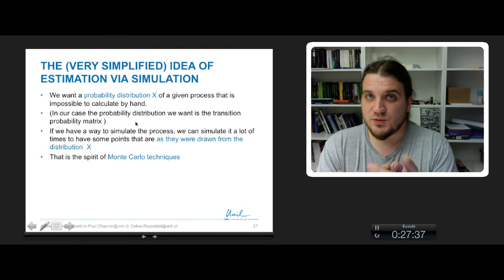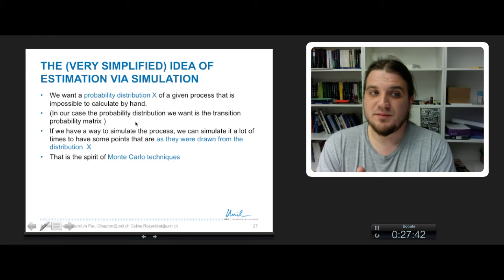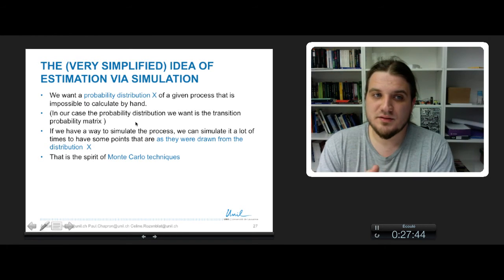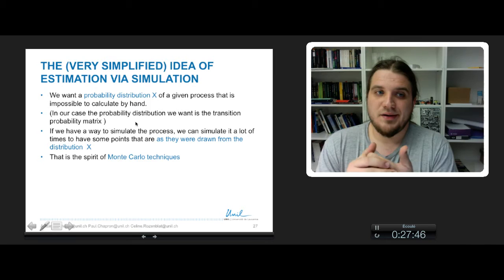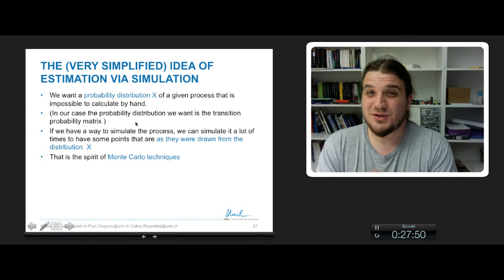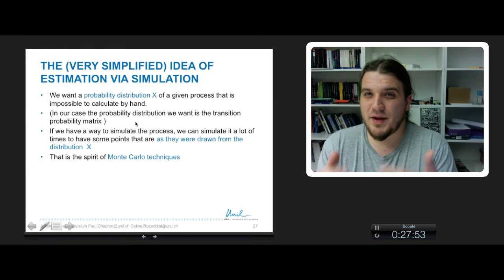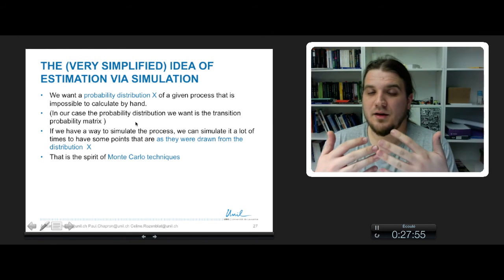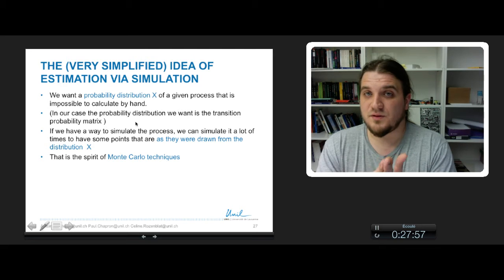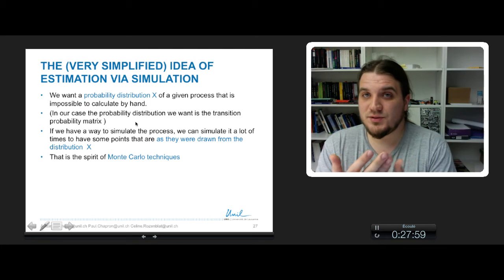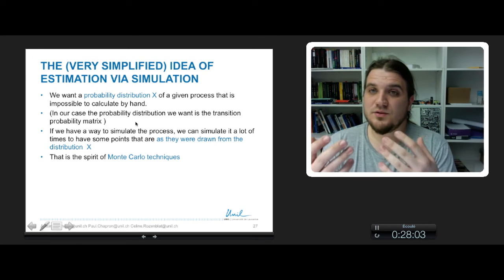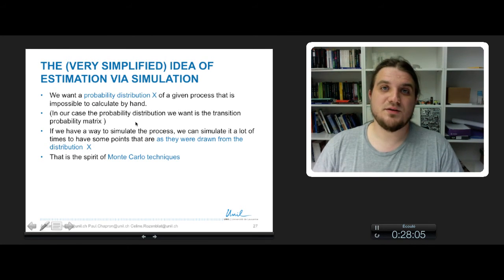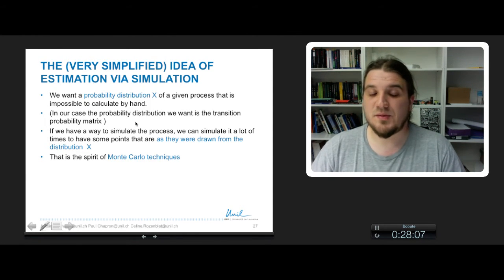If we have a way to simulate the process, we can simulate it a lot of times to have some points that are drawn from the distribution X. So if you iterate a lot of times a simulation of a process, it will produce some points that will be very close to what would be the real probability distribution.